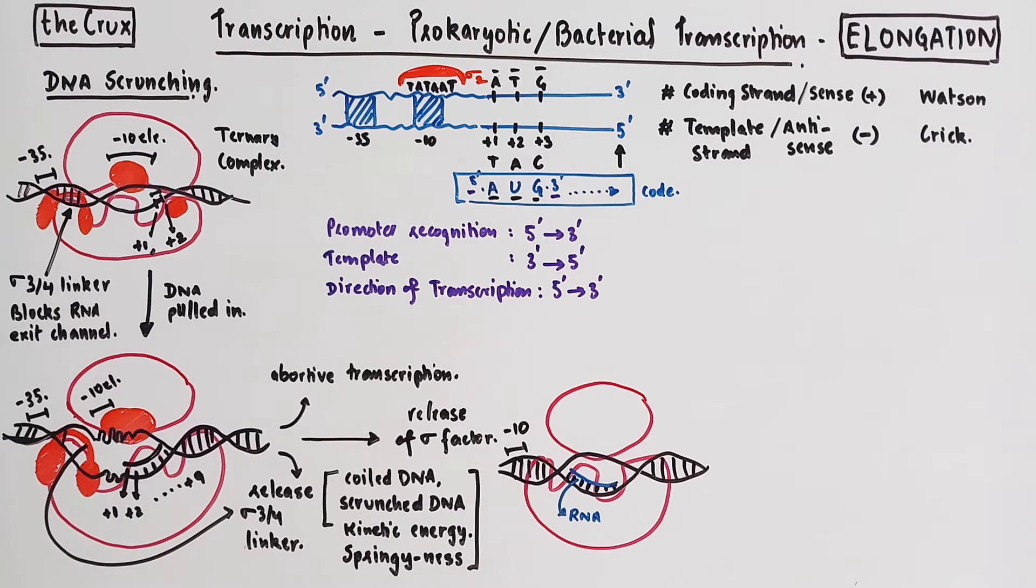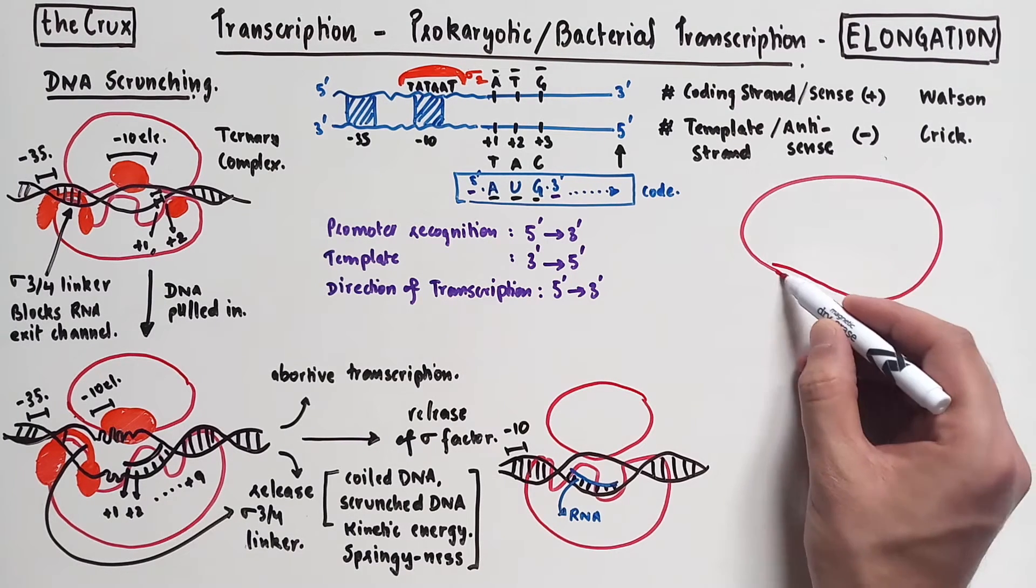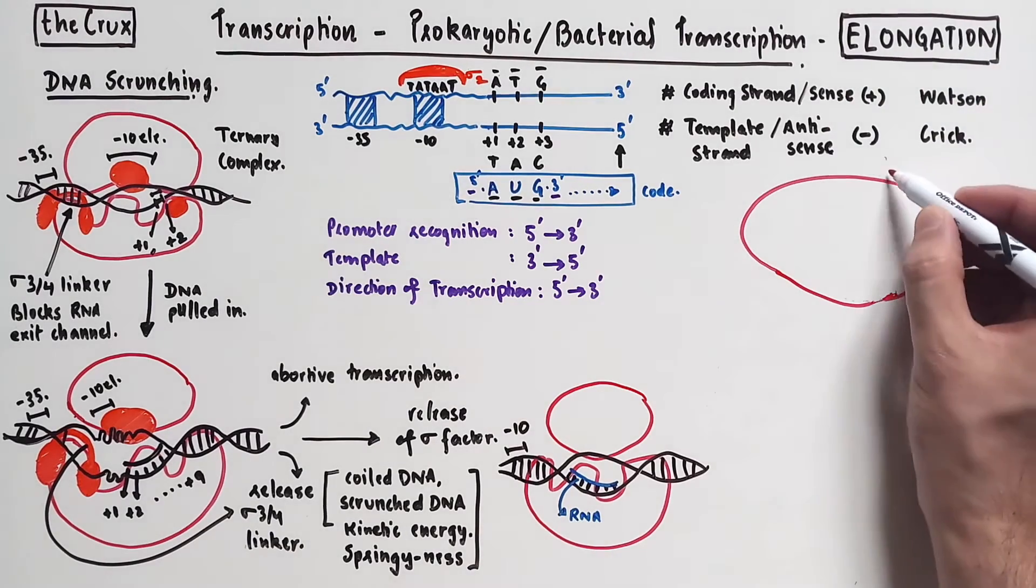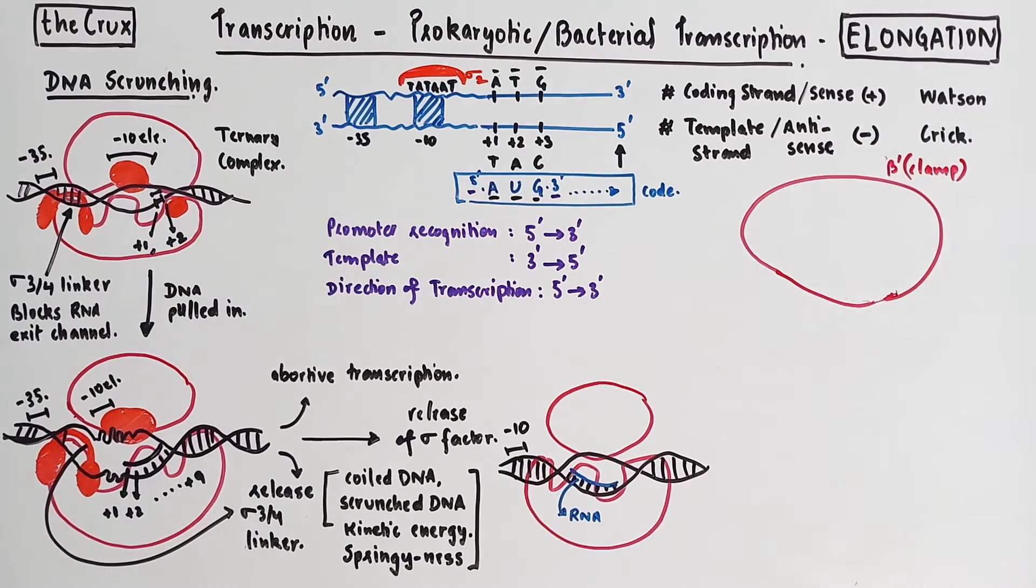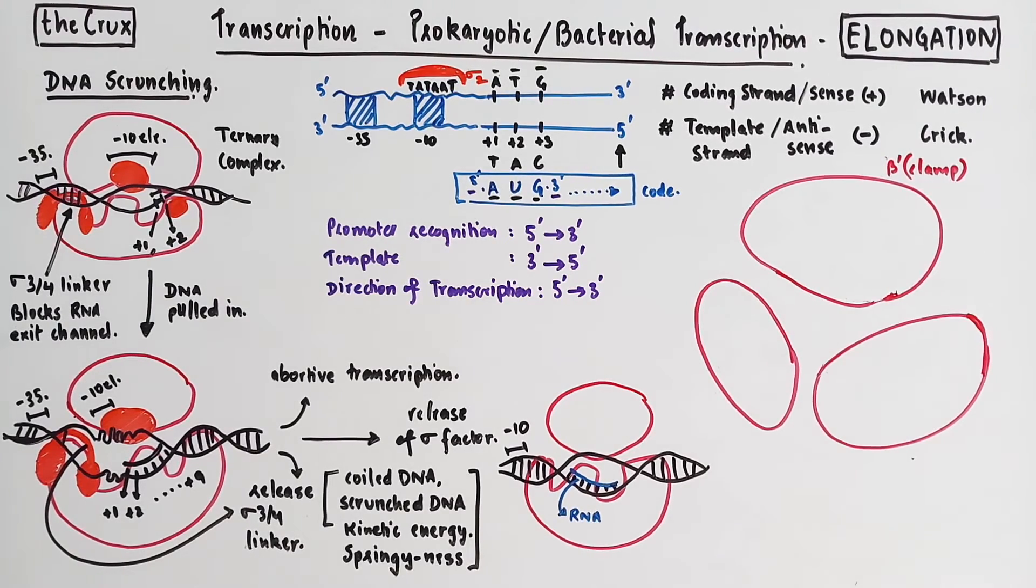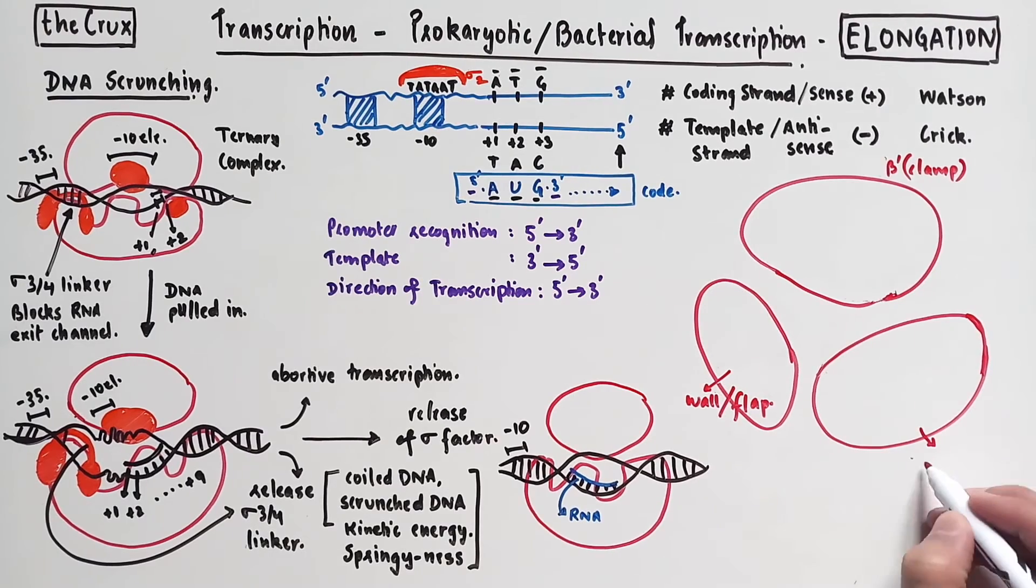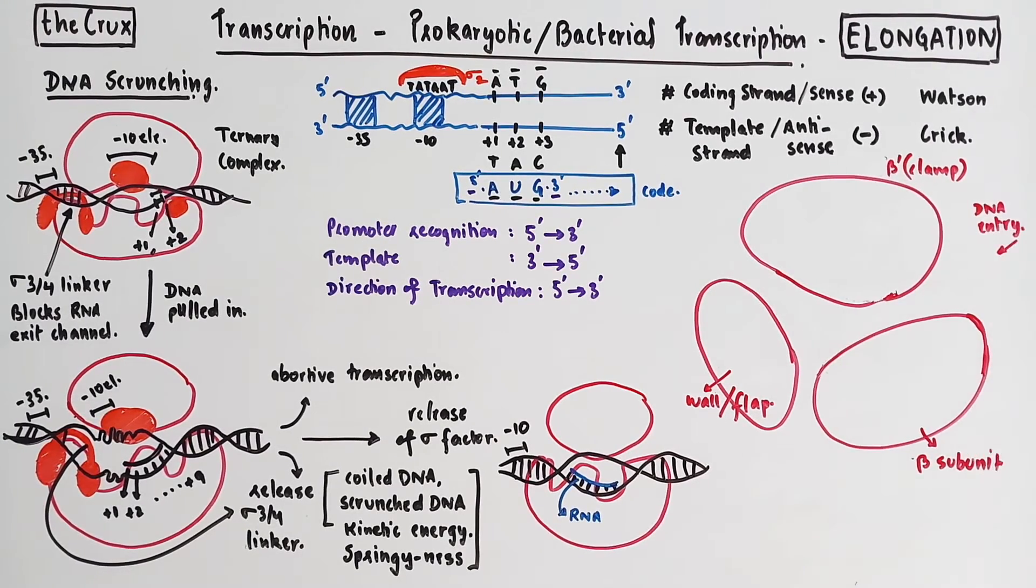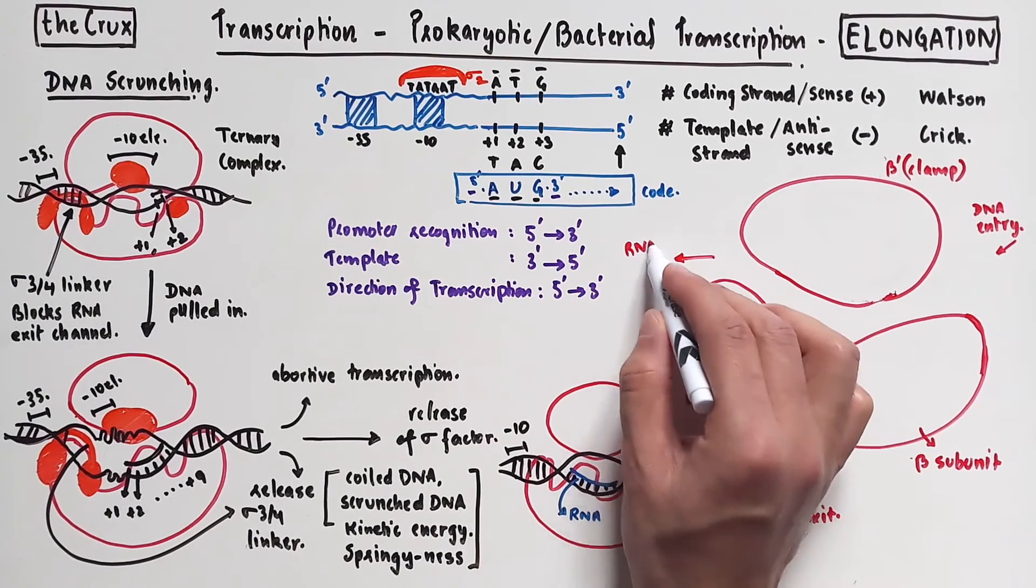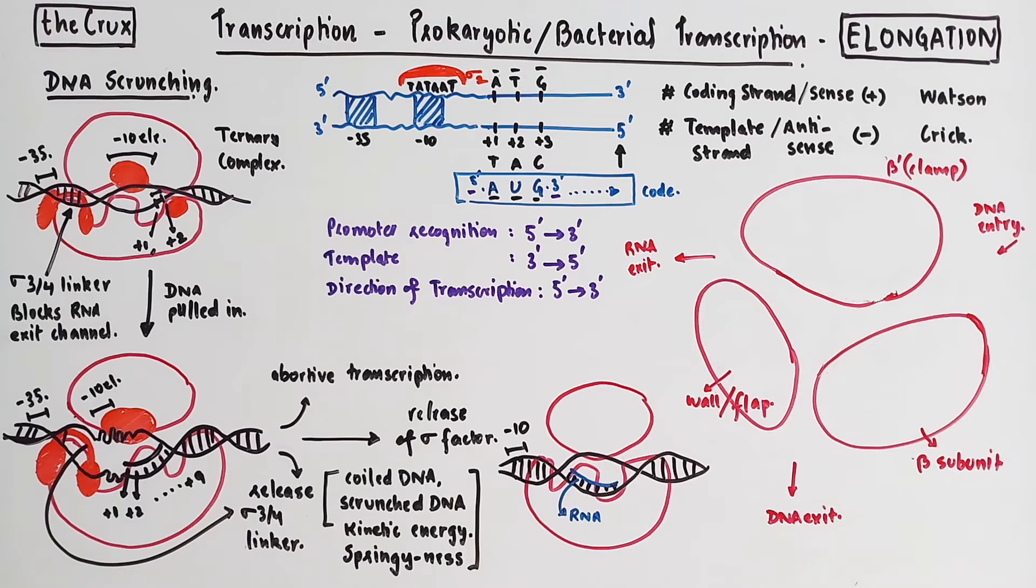One final thing before we dive into the elongation process. I want to expand our understanding of the RNA polymerase structure as it'll help us explain the elongation process better. In this view, we have the beta prime subunit on the top, which is also known as the clamp. The beta subunit, which is at the bottom, is split into the wall or flap and the main beta subunit. Here you have the DNA entry channel and also a DNA exit channel. At the end, you also have the RNA exit channel.